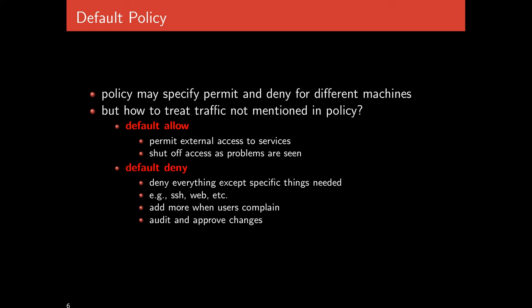The default allow position is better for usability within the organization. If a new service or protocol emerges using a particular port and there's no existing rule, default allow permits this traffic to go through. New traffic not previously seen is permitted by default, and if it turns out to enable bad traffic or has vulnerabilities, a new rule can be added after the fact to disallow it.